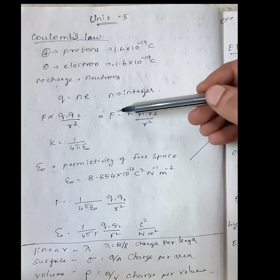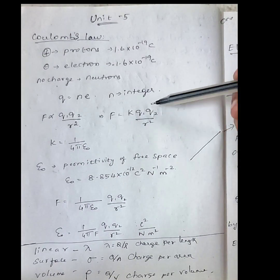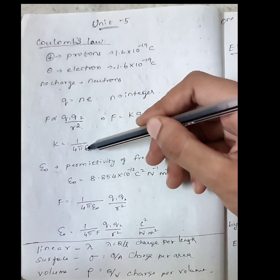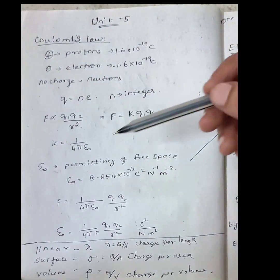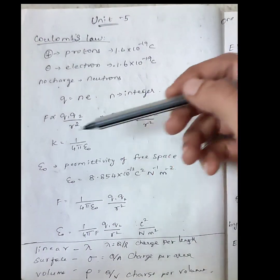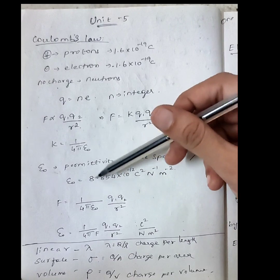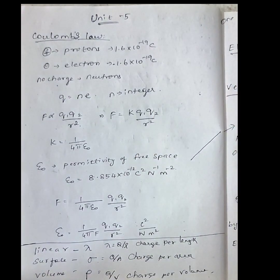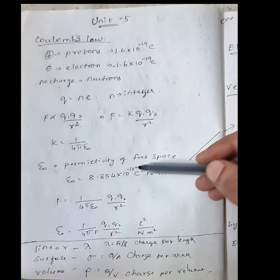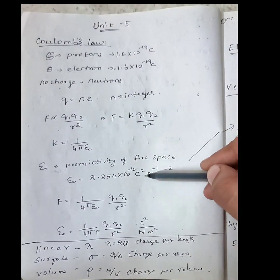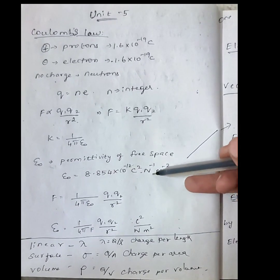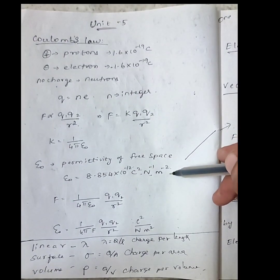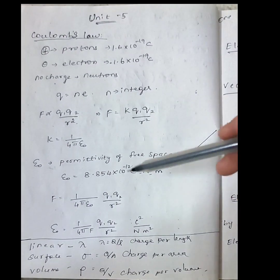So F = k × q₁q₂ / r², where k = 1 / (4πε₀). Here ε₀ is the permittivity of free space, and its value is 8.854 × 10⁻¹² C² N⁻¹ m⁻².